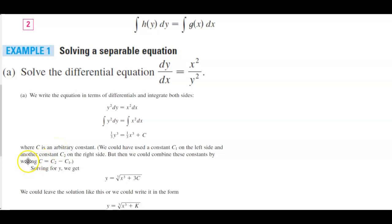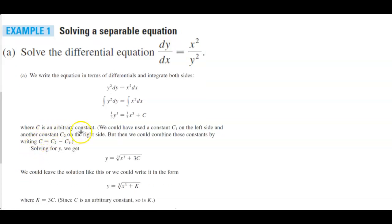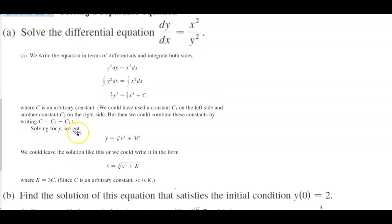Before we do, let's talk about that c, because c is an arbitrary constant. We would have used a constant c₁ on the left side and another constant c₂ on the right side, but then we combine these constants by writing c equals c₂ minus c₁. So if we want to solve for y, over here, if we multiply this entire equation by 3, we get y cubed equals x cubed plus 3c. Then taking the cube root of both sides, we have y equals the cube root of x cubed plus 3c.